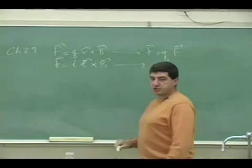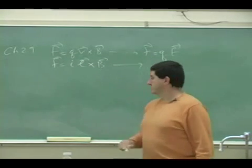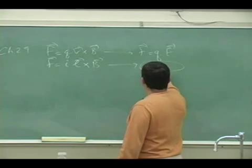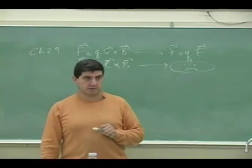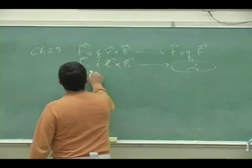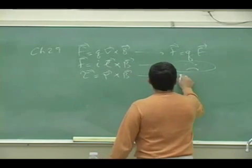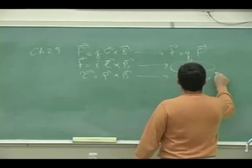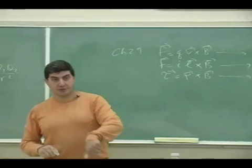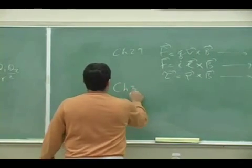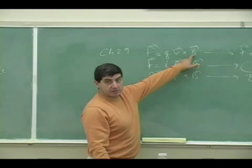F = QV crossed into B. And then this equation — does it have an analogy in chapter 23? No, there's no analogous equation for that. Then in chapter 29 we also learned the torque, and the electrical counterpart of that was P crossed into E. Now coming to chapter 30, we explore how B is created.